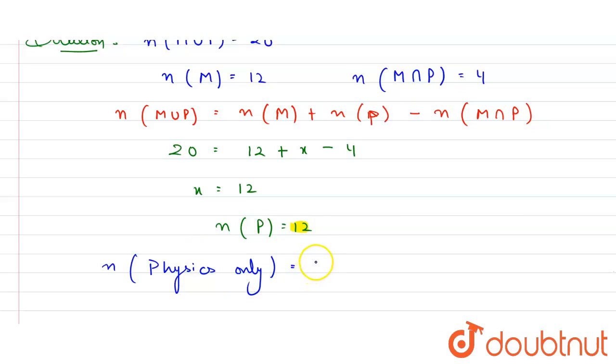So 12 minus 4, or if you want to add this in equation, we will write here number of teachers of physics minus number of teachers of physics and math common.